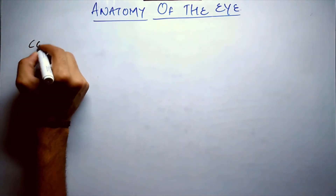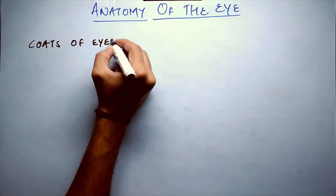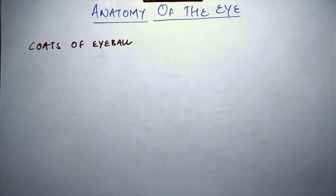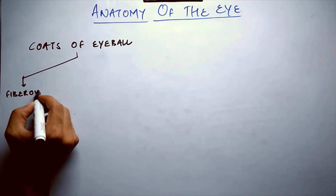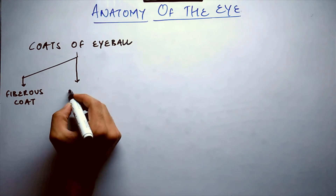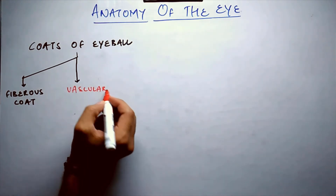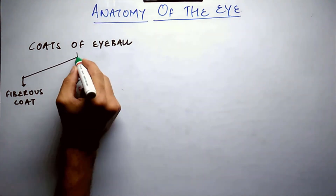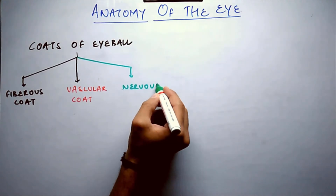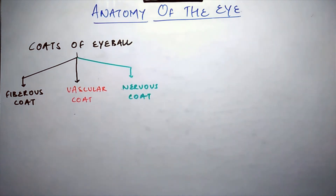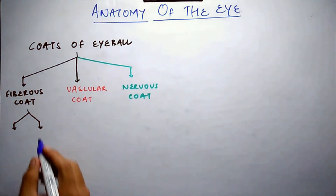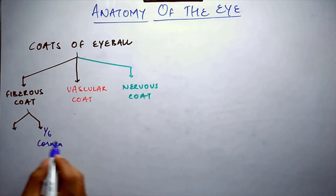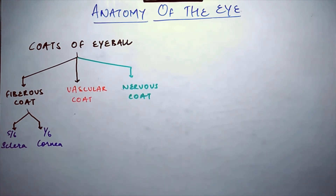For a quick theoretical review, the eye can be divided on the basis of the coats of the eyeball. There are three coats: the outermost is the fibrous coat, in the middle is the vascular coat, and the innermost is the nervous coat, made up of nerves or neurons. The fibrous coat comprises two parts: one-sixth anteriorly is the cornea, and the five-sixths part is the sclera.